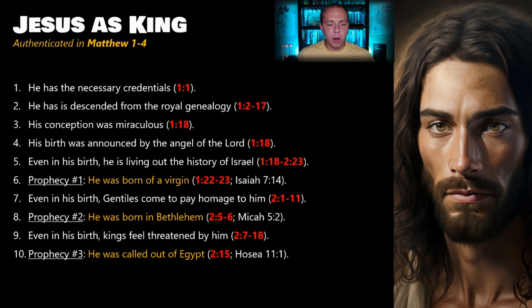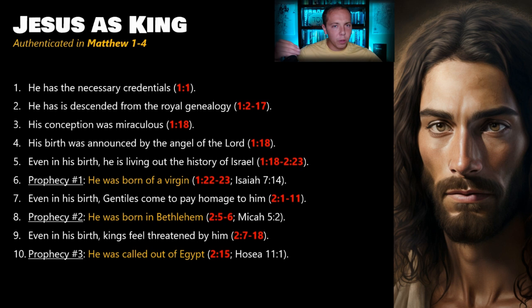Matthew begins making claims that Jesus fulfills prophecy. Over the course of the first four chapters, he is going to directly quote seven different prophecies that Jesus fulfills, plus allude to several others along the way. The first prophecy he cites is that Jesus was born of a virgin, a reference to Isaiah chapter seven. We have videos going more in depth into each of these prophecies and their original context throughout this series.